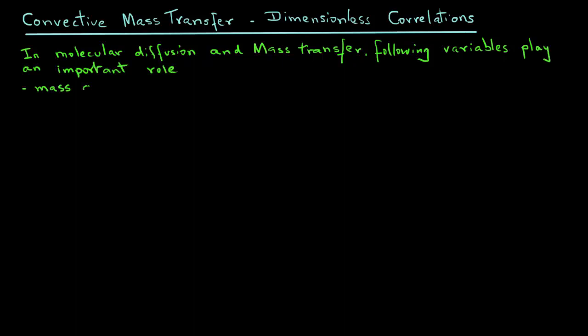We have the mass diffusivity, that is DAB, which is diffusivity of component A in, say, a fluid B, and then we have the variable fluid velocity, with a symbol u, that plays an important role.